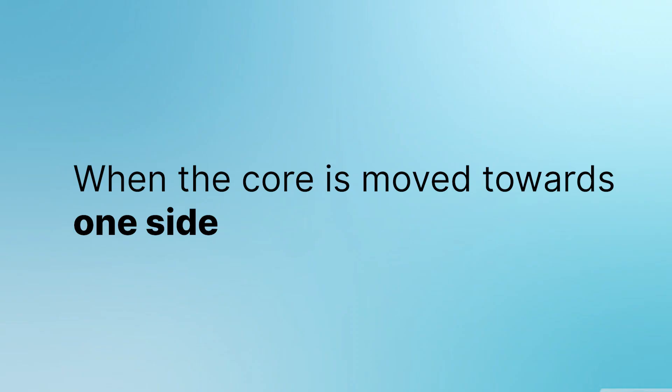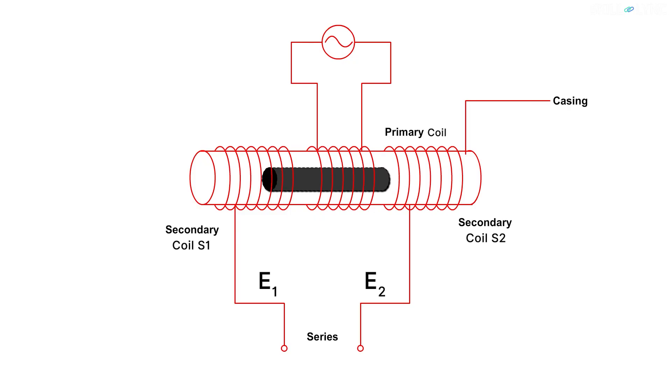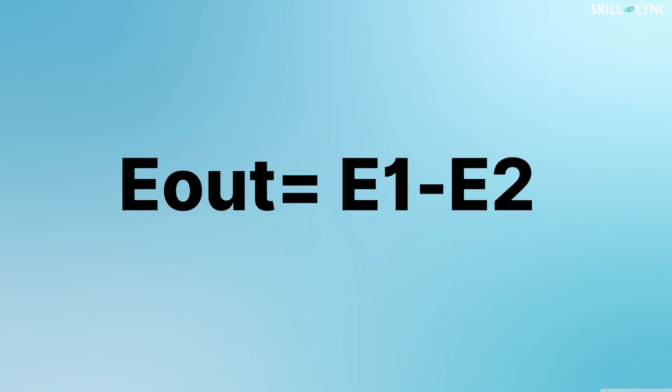Now, when the coil is moved towards one side, for example S1, the secondary coil becomes more strongly coupled than S2. This means that there is a larger EMF developed in S1 than in S2. The output of this is given by Eout = E1 - E2.